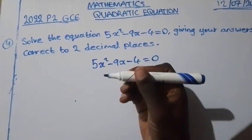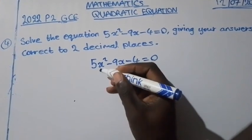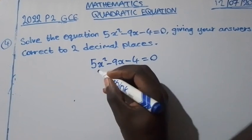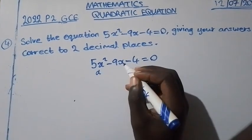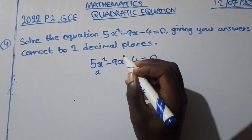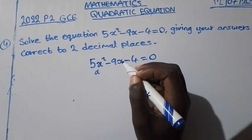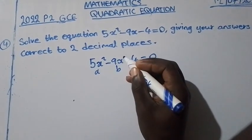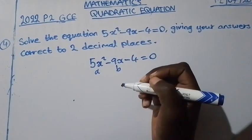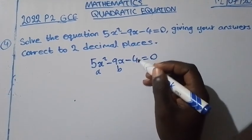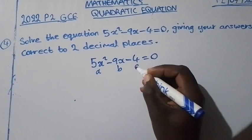Where the term with x to the power 2, or the term with power 2, is labeled as A. Then the term with x without the power 2 is labeled as B, because it has power 1 which is invisible. Then the term without any variable is considered as C.